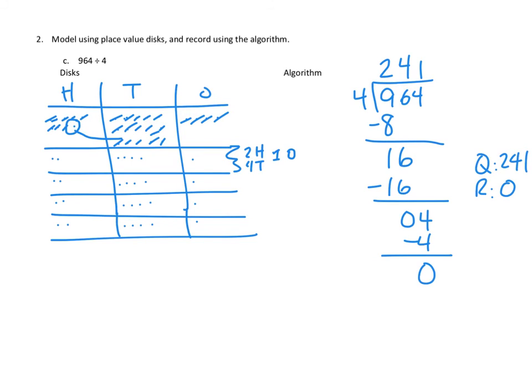And is that what we got on our other side? Well, sure enough, we had 241 in each of our groups with no remaining units. All the hundreds, tens, and ones got used up. There was no remainder. So whether we do it one way or the other, our quotient is 241 with a remainder of 0.